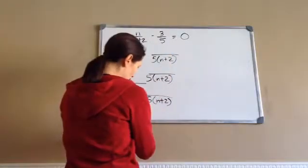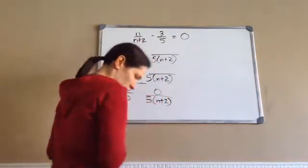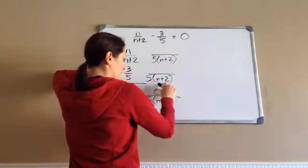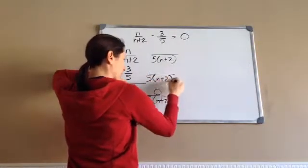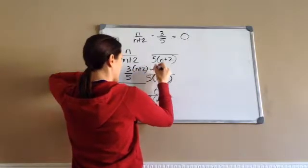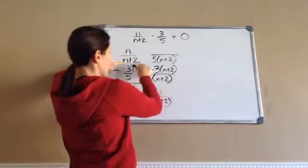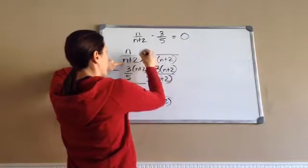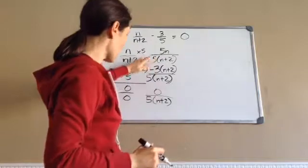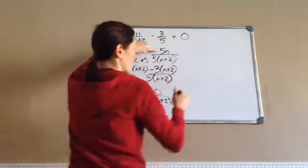So, 0 times what would equal this? Well, anything times 0 is 0. And then 5 times what gave me 5 N plus 2? Well, I multiply N plus 2. So, I've got my minus here. Minus 3 times N plus 2. And then N plus 2 times what equals that? Times 5. So, 5N.